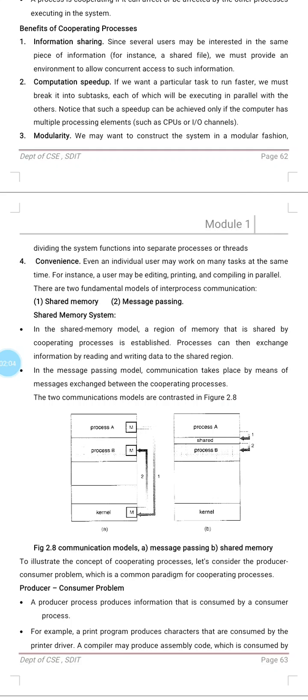The next benefit is convenience. As a user sitting in front of a system, we can listen to music, type something, and print something all at the same time — doing a number of tasks simultaneously. That is what we mean by convenience. These are the benefits of cooperating processes.